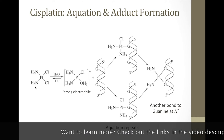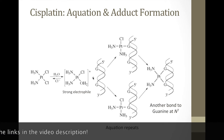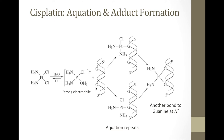First, cisplatin in the body reacts with water to displace one of the chlorine ligands with a water molecule, forming a strong electrophilic cation species. This species reacts with the nitrogen in one of the guanine base pairs in cancer-encoding DNA, forming a platinum-nitrogen bond in guanine. This reaction then repeats — instead of the water molecule, the complex is attached to nitrogen, forming another strong electrophile, which forms another bond to guanine at the seventh nitrogen in the guanine molecule in the DNA. Now we have platinum bonded to two nitrogens in DNA as well as two nitrogens from the ammonia groups.